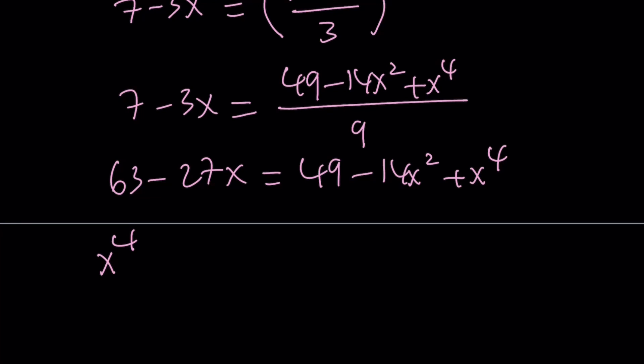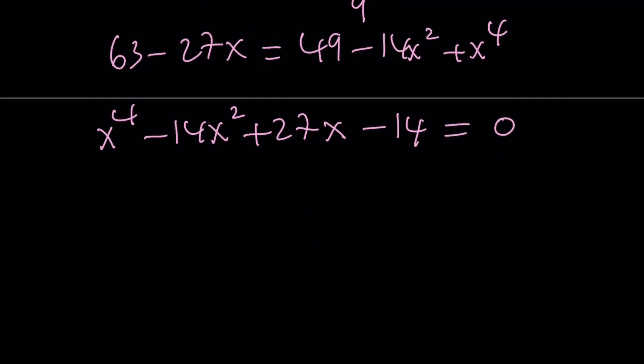Let's do it. x to the fourth minus 14x squared, bring the negative 27 as to a positive and then 49 minus 63 is just going to be negative or minus 14. So that's going to be our quartic.